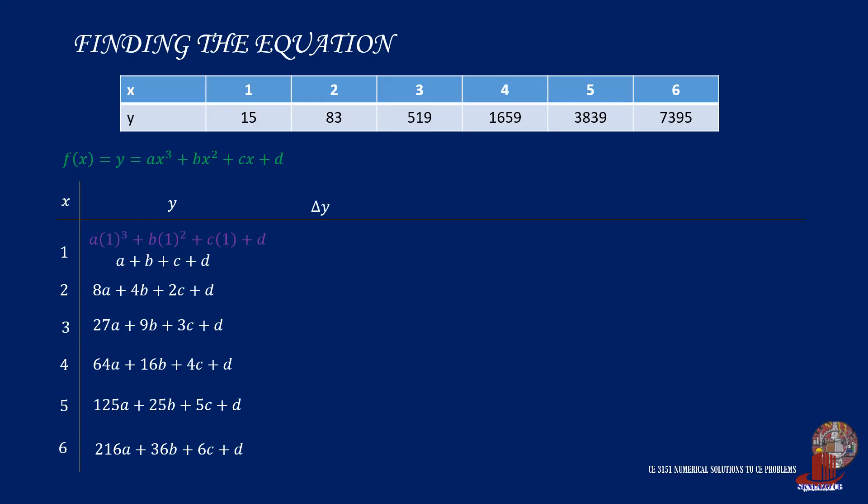From here on, take delta Y. Although they are equations, it would be easy to subtract them. For delta Y naught, we take 8A minus A as 7A, then 4B minus B as 3B, and 2C minus C as C. D minus D will be 0, so we have 7A plus 3B plus C. Taking the differences for the others will be the same. 27A minus 8A is 19A, 9B minus 4B is 5B, and 3C minus 2C is C. Do the same procedure until we complete delta Y.